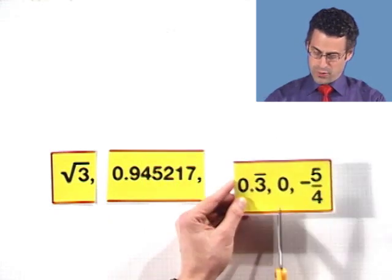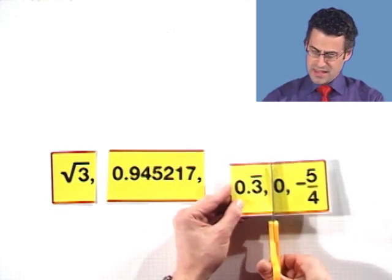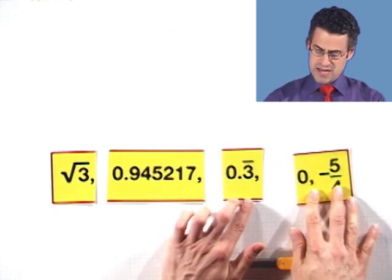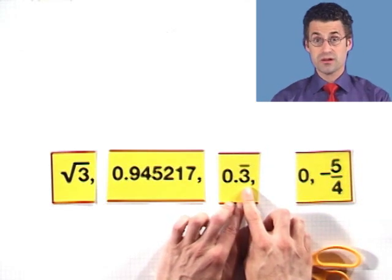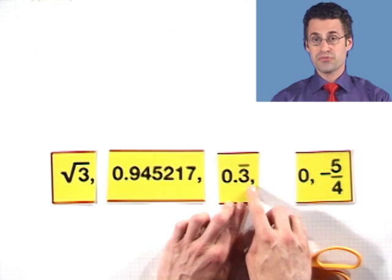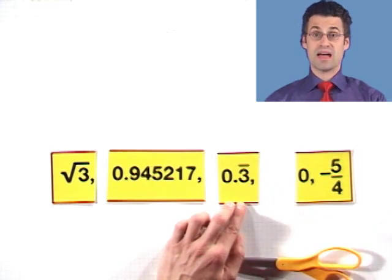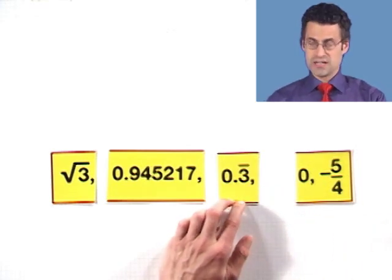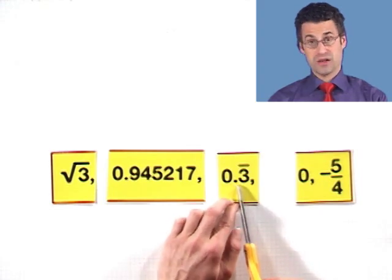Then I've got this one, 0.3 with a bar. And what that means is that that three digit repeats forever. This is a repeating decimal, 0.333333 forever, never ending. Looks like a long thing, but it's just around 0.3 something.